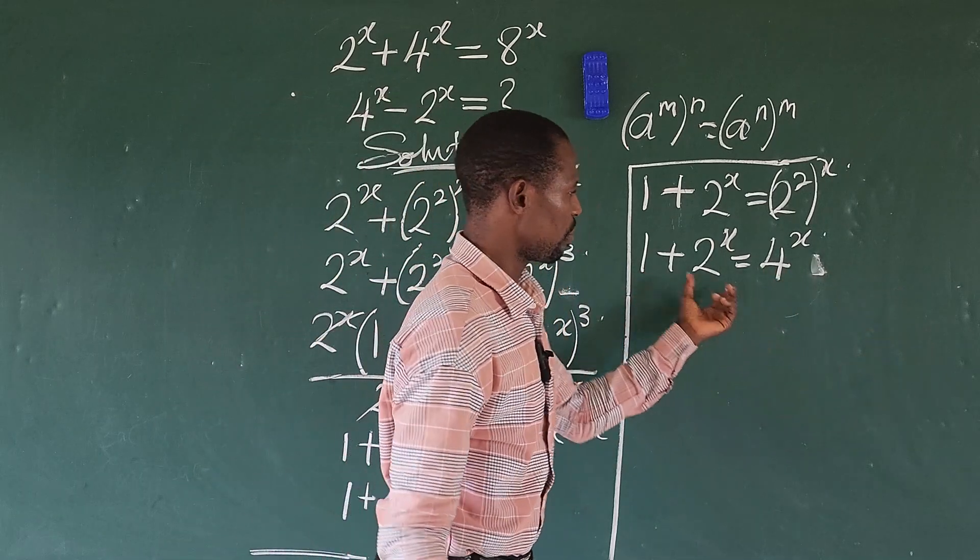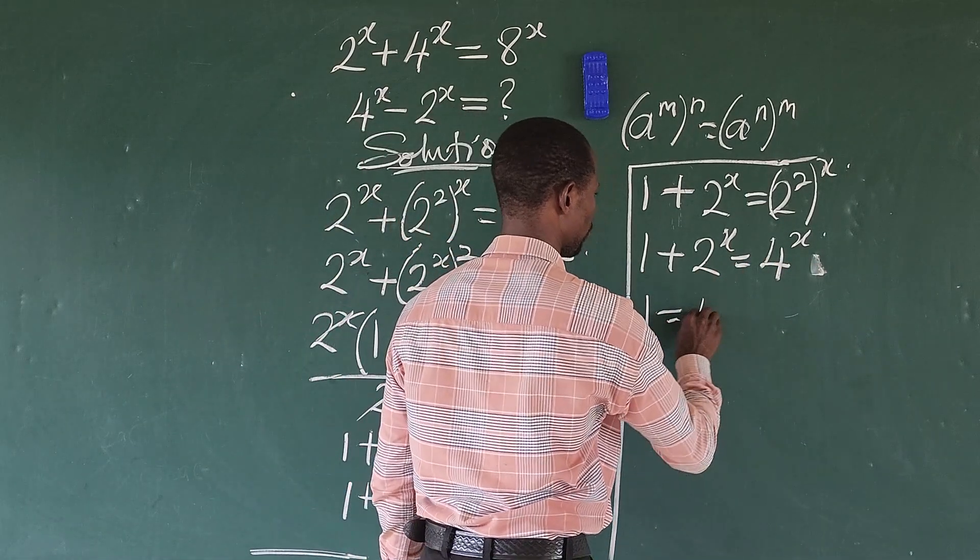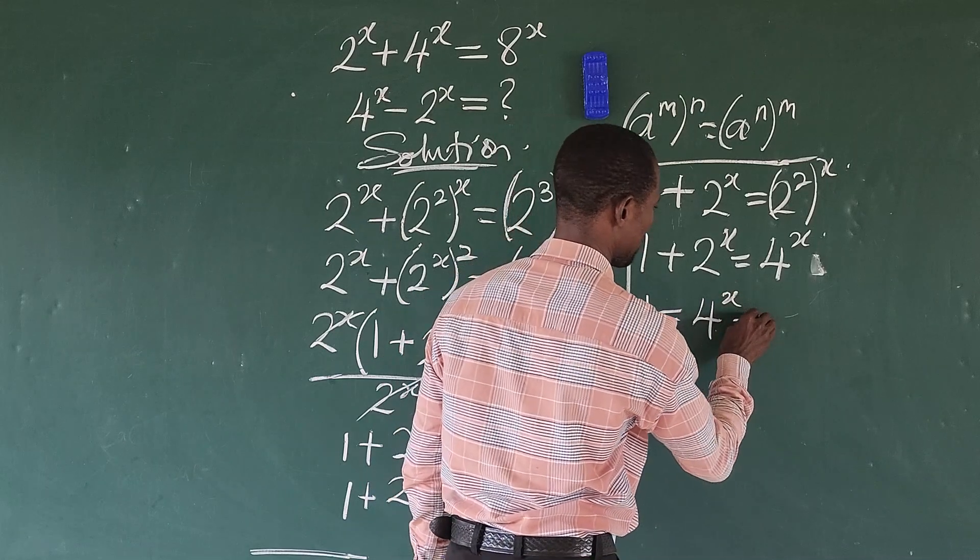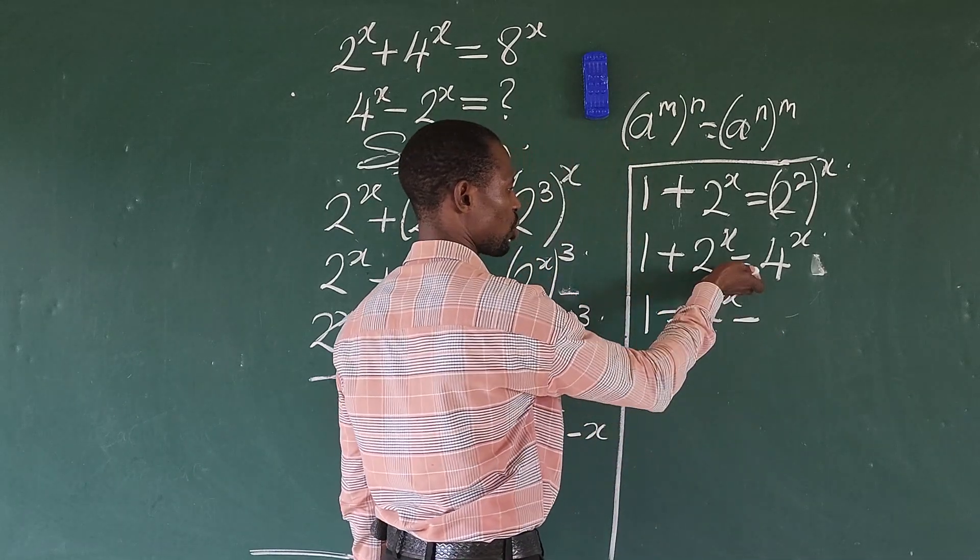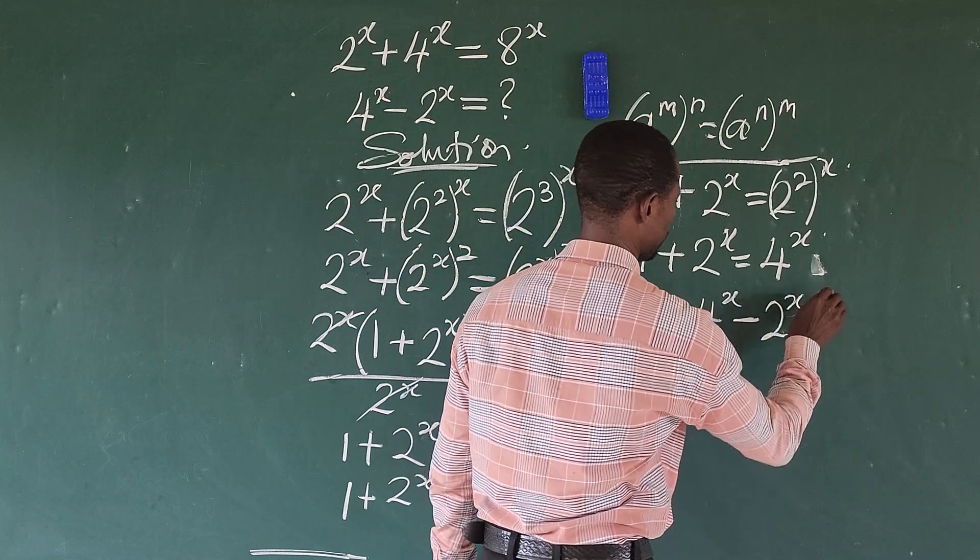Now we have to collect like terms. So move this to this side of the equation. So we're going to have 1 equals 4 to the power of x minus, when it crosses the sign of equality it turns to minus, so we have 2 to the power of x.